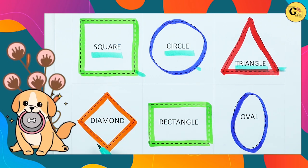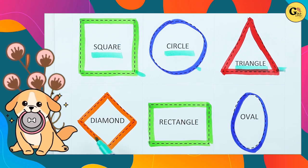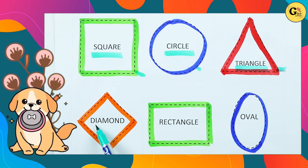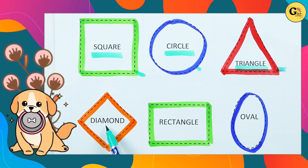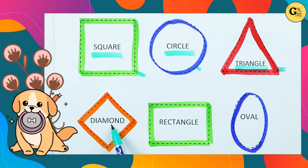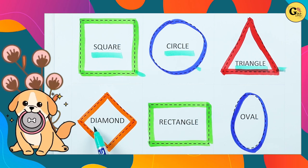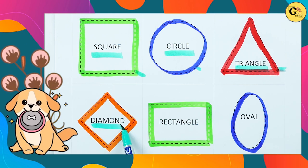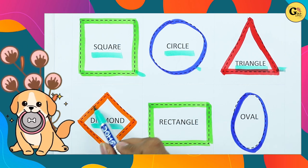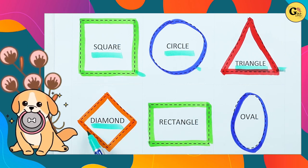Which shape is this? Diamond. D-I-A-M-O-N-D. It's a diamond with orange color.